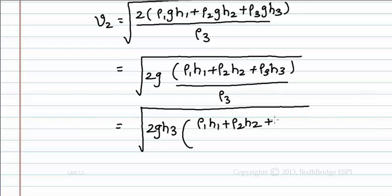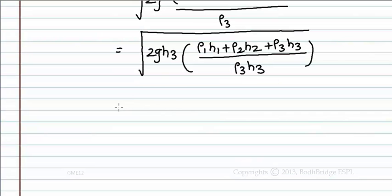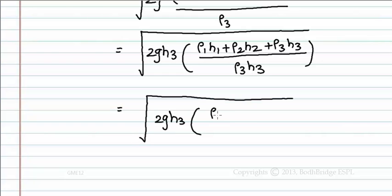We can write the above equation as root of 2gh3 into rho1 h1 by rho3 h3 plus rho2 h2 by rho3 h3 plus rho3 h3 by rho3 h3.